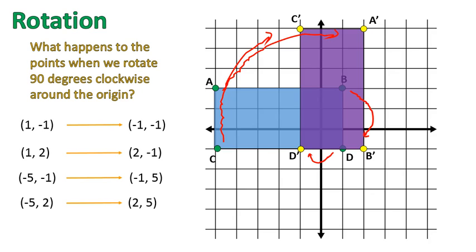So when we look at those numbers, just looking at the numbers, can you make a rule? Some kind of rule that we can make that says this is what happens when we rotate 90 degrees clockwise around the origin.